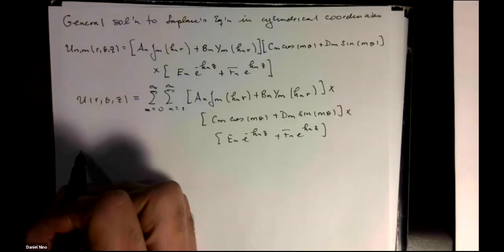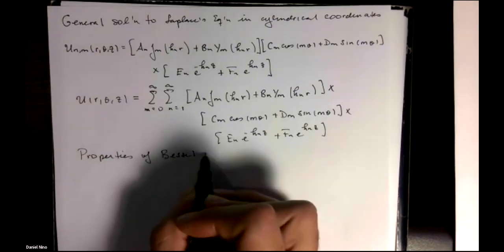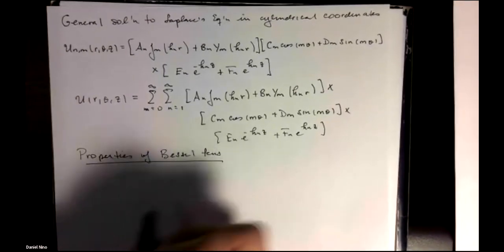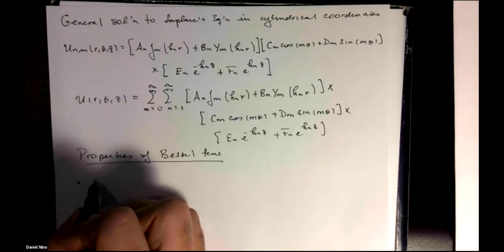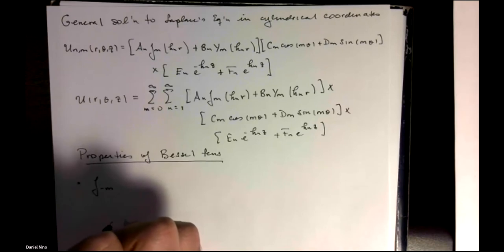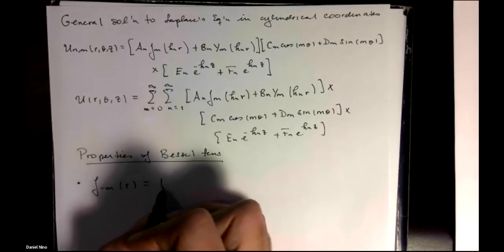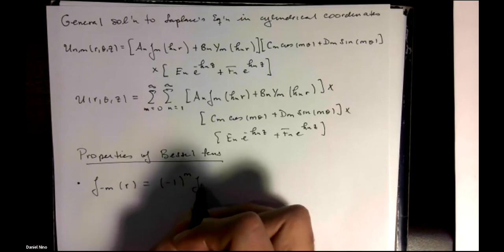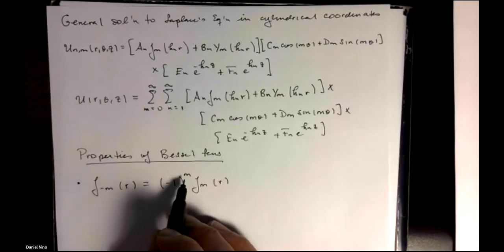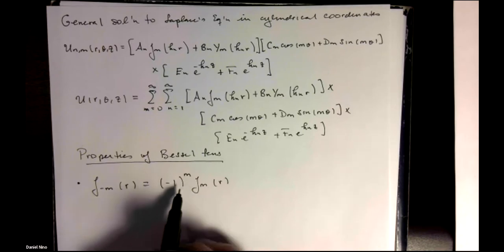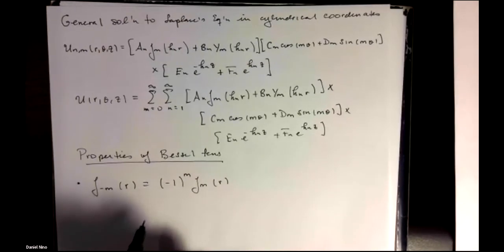So from here, we can list some of the properties of these functions. One of the properties that may be of utility is the Bessel function of the first kind of order minus m is equal to the Bessel function of the first kind of order m times this extra factor minus 1 to the m. So you may pick up a negative sign if you change the order to its negative counterpart.